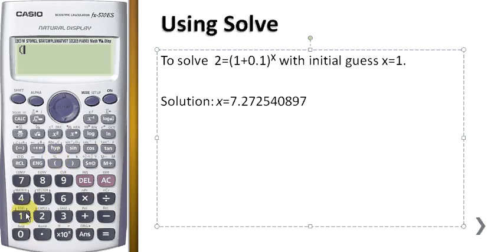by calculating 1 plus 0.1 to the power of 7.272540897, and you'll get 2.